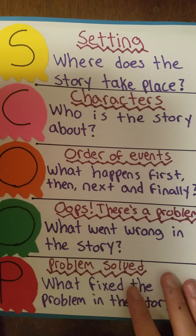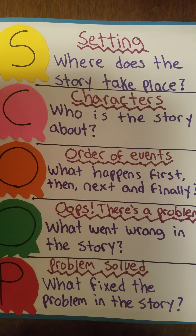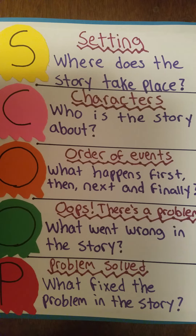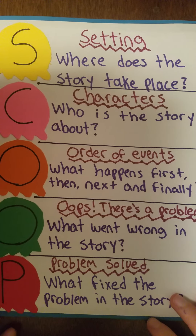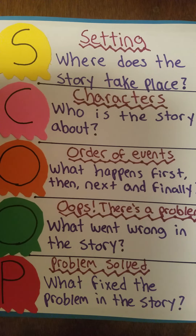First, we have our Setting, which answers the question: where does the story take place? We have our Characters, which answers the question: who is our story about? In Order of events, we're going to tell what happened first, then next, and finally.